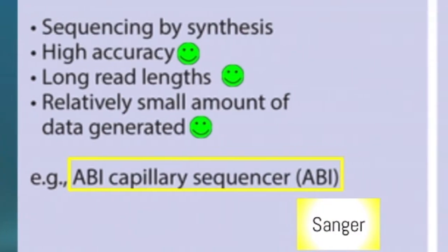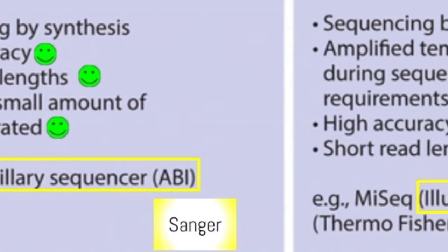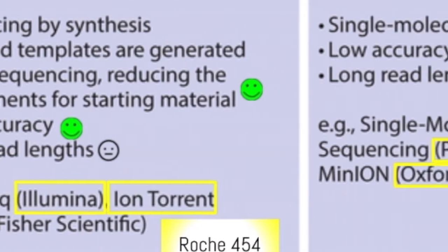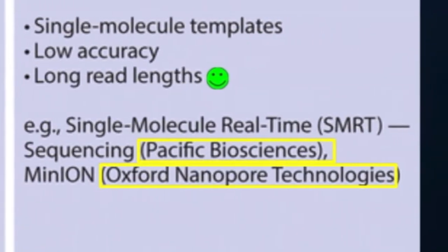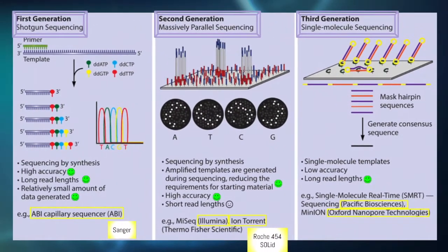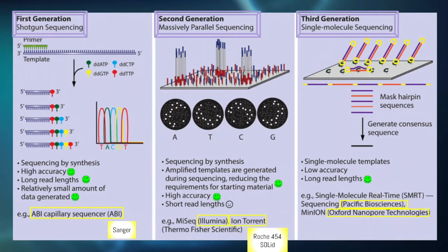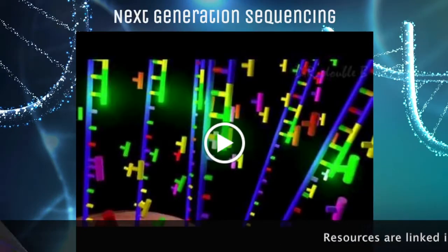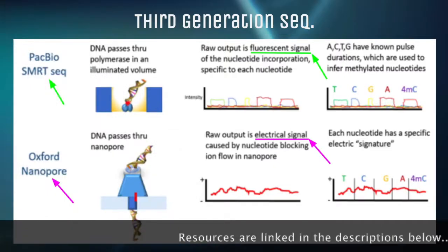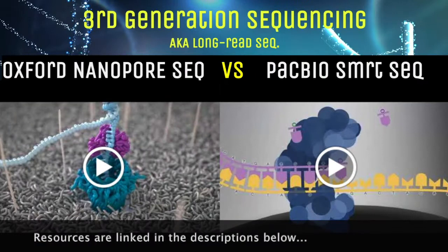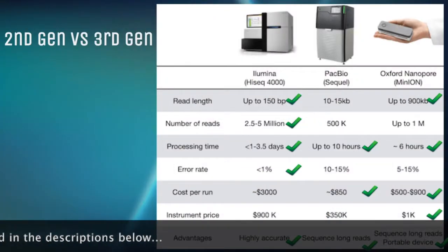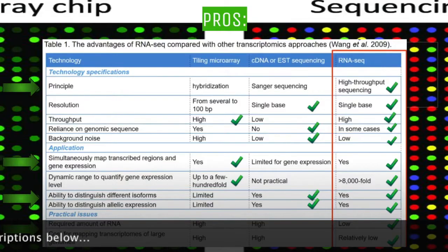Sequencing technologies include Sanger, Illumina, IonTorrent, Roche, Oxford Nanopore, PacBio, and much more, all of which have their pros and cons. Generally, it's good practice to use a combination of as many sequencing methods as you have available to ensure the most accurate and well-supported consensus sequence possible.